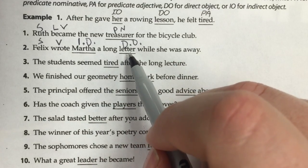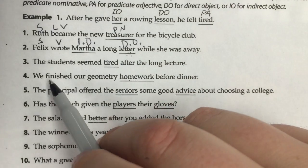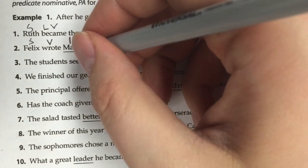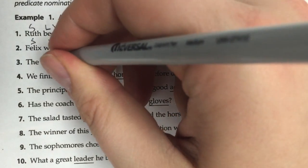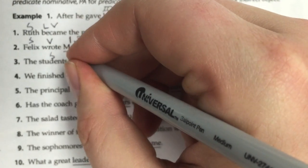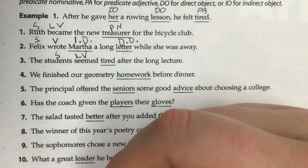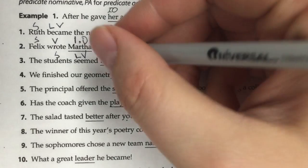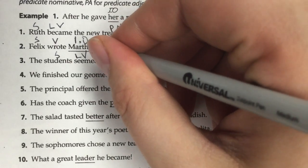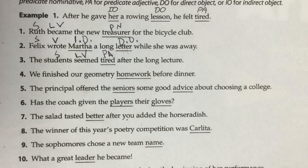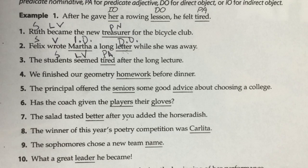Number three: 'The students seemed tired.' Seemed is our verb and the students is our subject. Seemed is a linking verb because I can replace it with an equal sign — the students equal tired. Tired is a describing word; it's an adjective. The only thing that can come after a linking verb is a predicate adjective or predicate nominative. Since tired is an adjective, it is a predicate adjective.